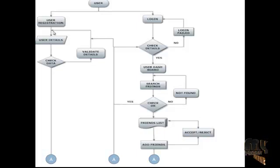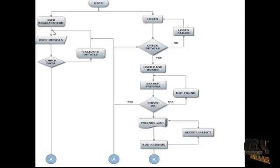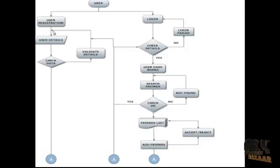Once the user is registered in our online social network, they will proceed with the login method. After login succeeds, they can search for friends and send a friend request. They can then post messages to the wall. Once the message is posted in the wall, that message will be visible to friends.